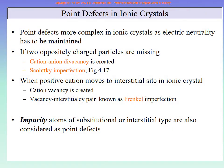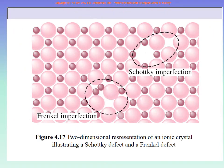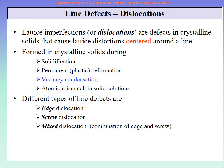We also covered point defects in ionic crystals — cation, anion, divacancy, Schottky imperfection, Frenkel imperfection, and the geometrical details of Schottky and Frenkel imperfections. That is what we covered in detail. We just opened the slide for line defects but then ended the lecture there.